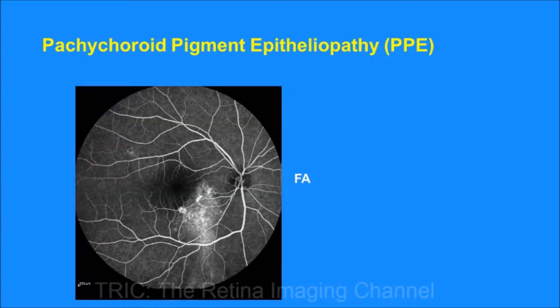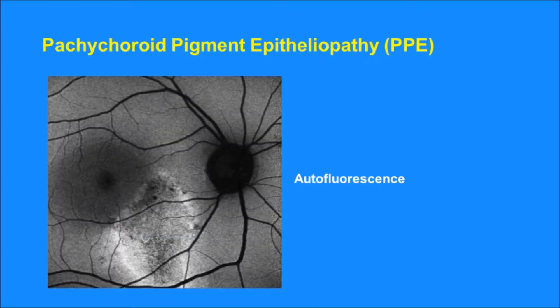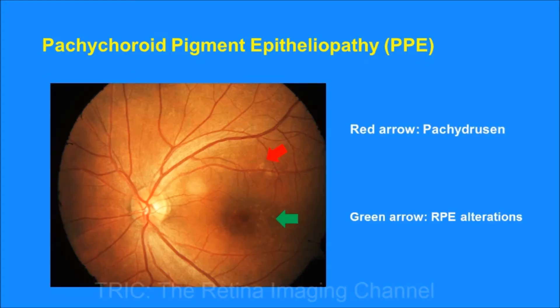There is RPE atrophy noted as hyper-reflectivity on the infrared reflectance image. Fundus fluorescein angiography shows window defects in the same area, suggesting RPE abnormalities. The autofluorescence image very nicely shows hypo-autofluorescence at the areas of RPE loss, and RPE stress is shown as hyper-autofluorescence on the edges.